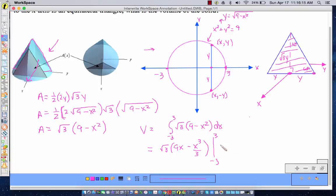OK. And then that equals root 3. I'm going to plug in 3 here. 9 times 3 is 27 minus 3 cubed is 27. So minus 27 over 3 minus plugging in a negative 3. That gives me negative 27 minus a, let's see, negative 3 cubed. So that's going to be a negative 27 over 3.